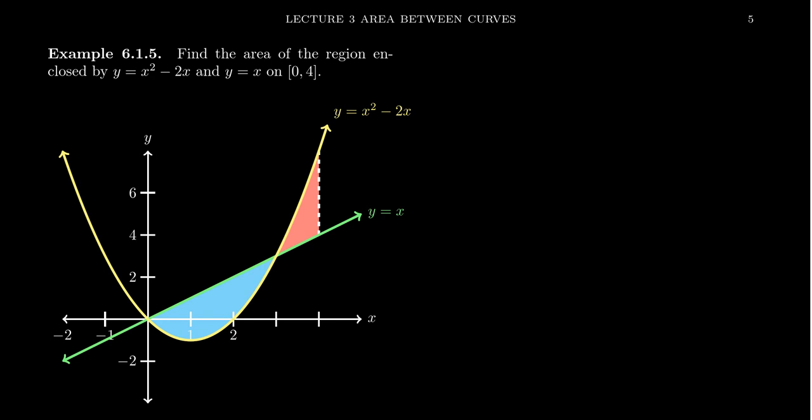Now you can see in the illustration here that if we take the green line to be y equals x, and then the yellow curve is our parabola, y equals x squared minus 2x. If we look at the goalposts, x equals zero is the origin over here where they both intersect. And x equals four is actually over here.